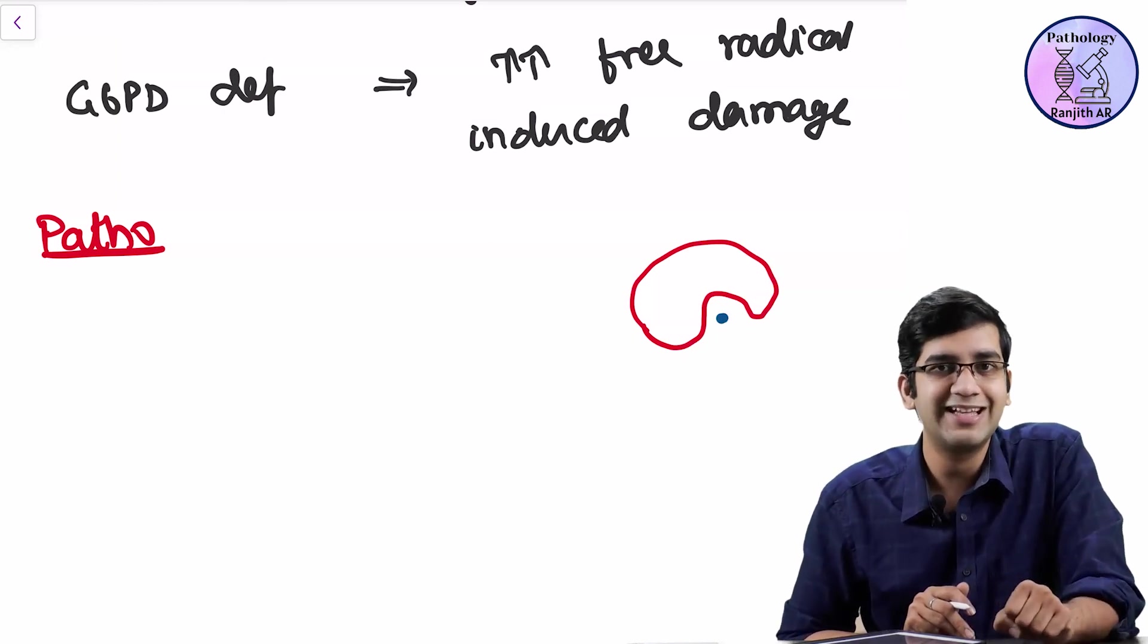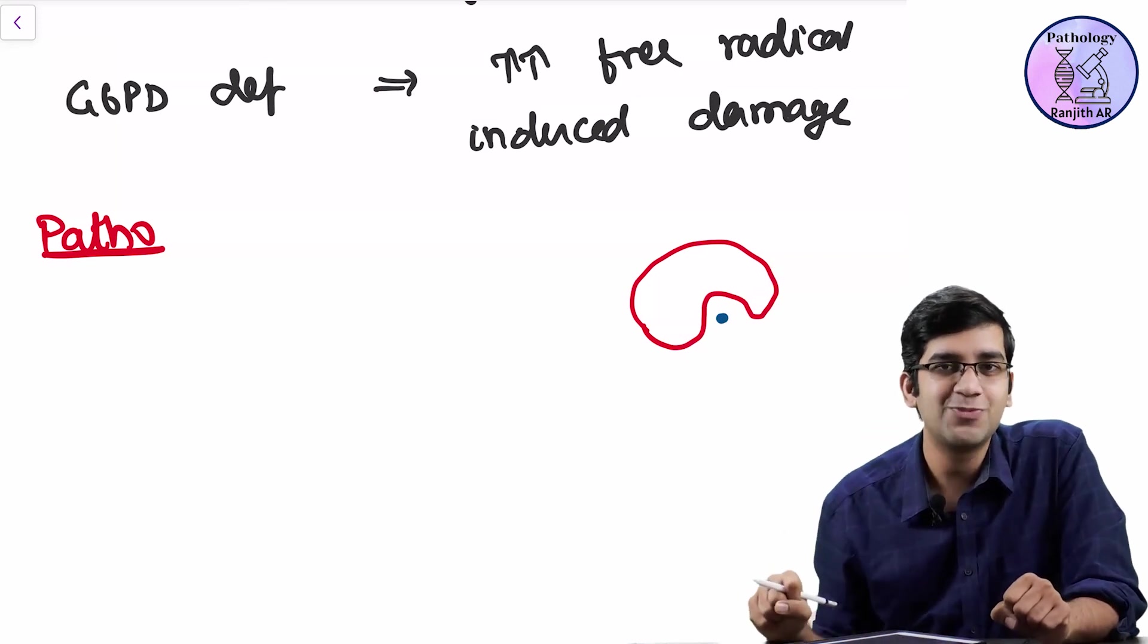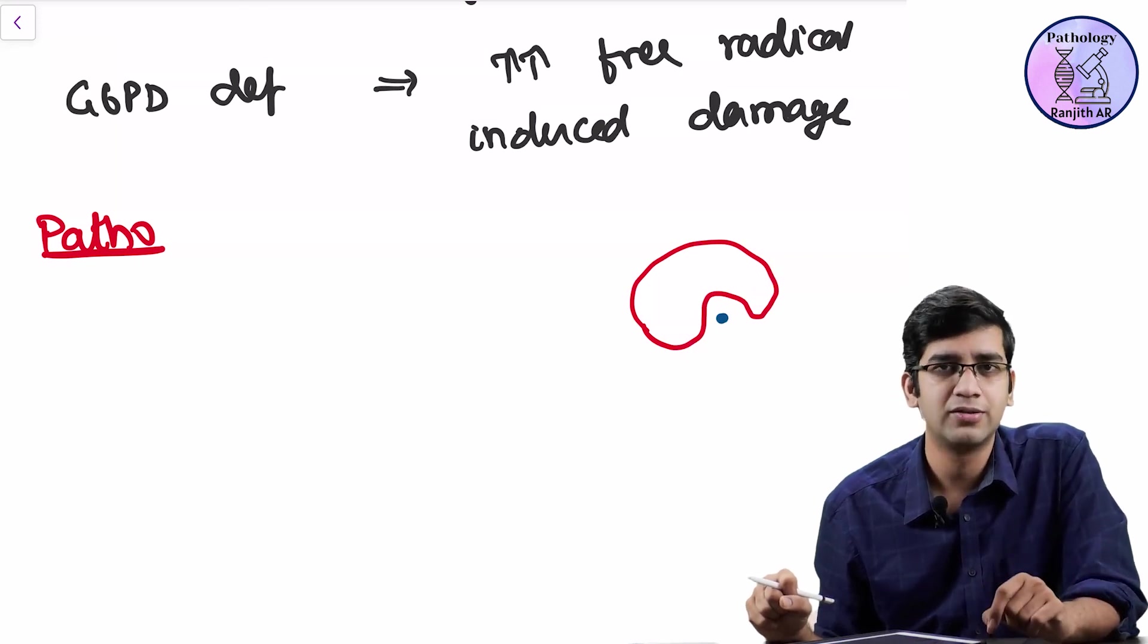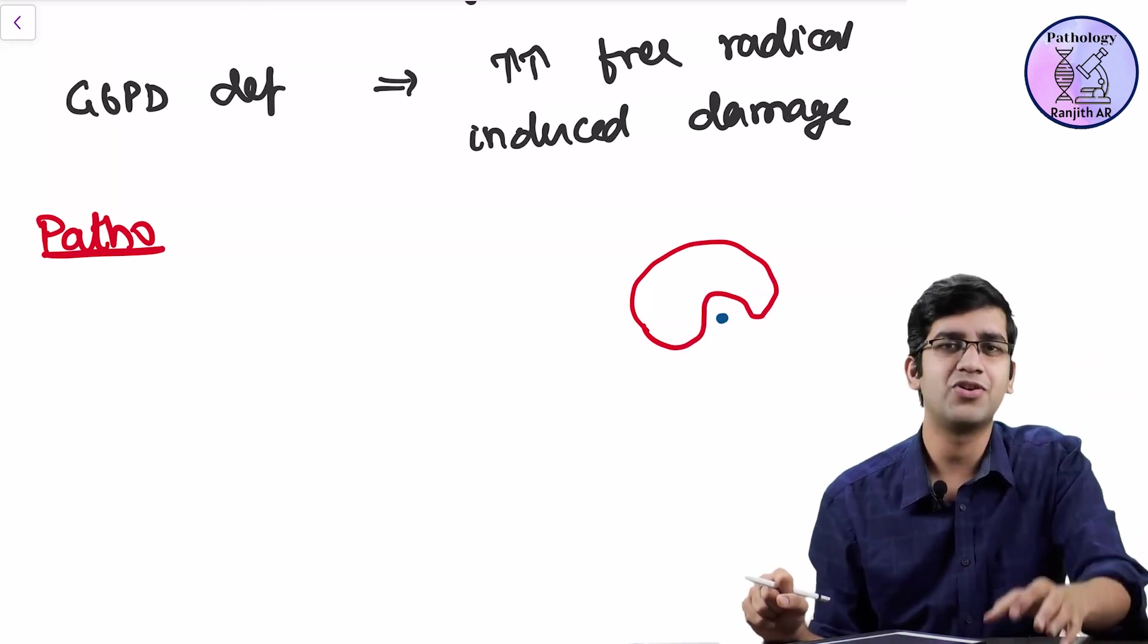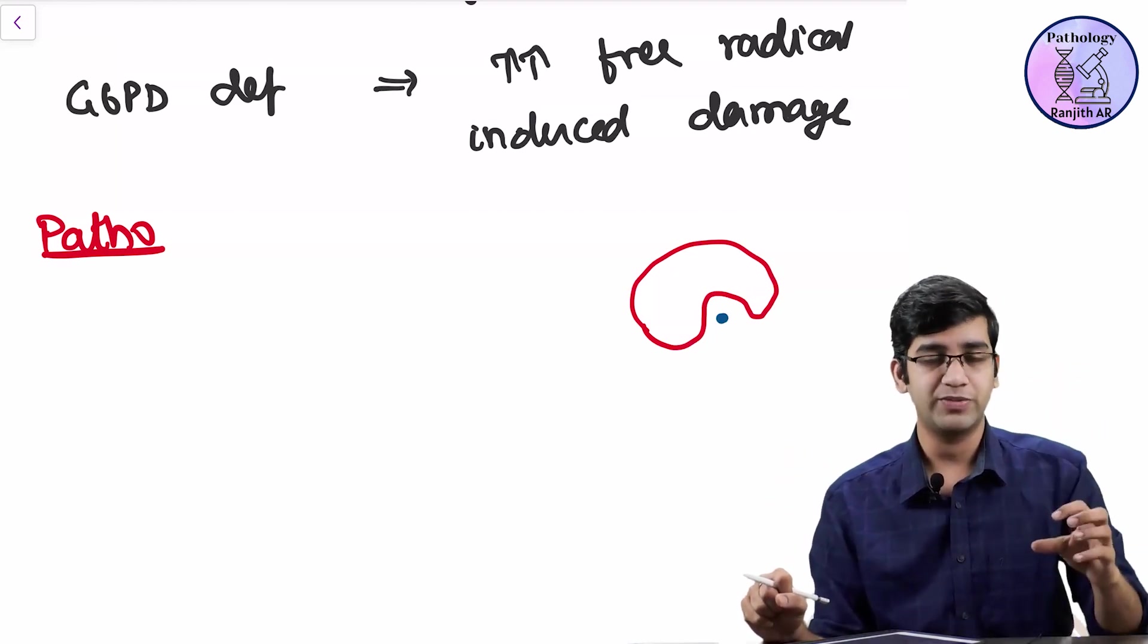When you take Robbins, it will be written that bite cell is formed by plucking of the Heinz body by RBC, by macrophages, splenic macrophages. It is wrong. You will confidently say Robbins is wrong because you know the basics. Simple logic. Let's assume whatever Robbins says is correct. Let's assume that.